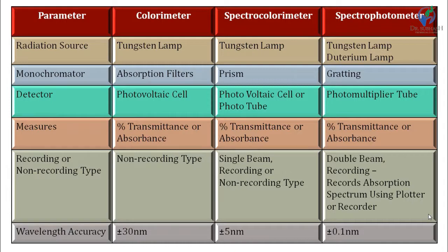For the detector: in colorimeter a photovoltaic cell is used; in spectro-colorimeter, PVC or photoemissive tubes are used; and in spectrophotometer, a PMT (photomultiplier tube) is used. The sensitivity increases in the order: photovoltaic cell, then photoemissive tube, then photomultiplier tube. In spectrophotometer, all components of highest efficiency and sensitivity are used, which is why spectrophotometers are the most accurate and reliable.